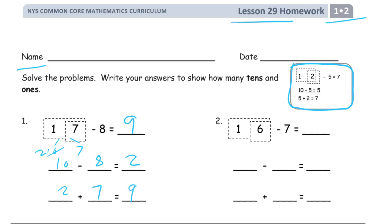Sixteen minus seven. Sixteen — remember that's ten and six. Subtract seven from the ten, and we'll have three left. Ten minus seven, three left. And then we add the parts — the three and the six — add the leftovers back together to see what we have left. Three plus six. Nine.